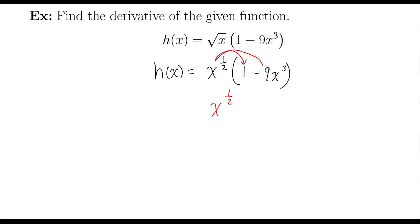x to the 1 half power times negative 9x cubed is going to be negative 9x to the, you add your exponents together. That's how you would multiply those two terms together.